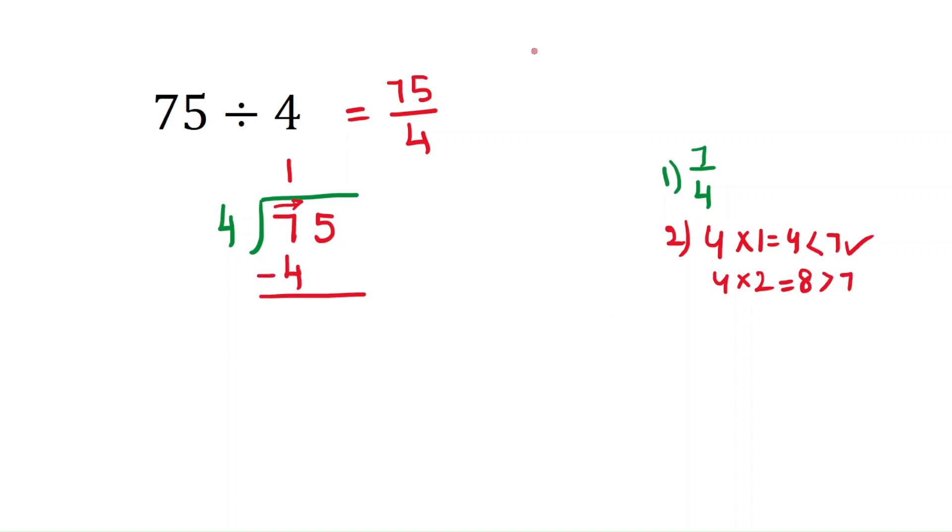And then next subtract. 7 minus 4 is 3. And fourth step is bring down. So you need to bring down the next number which is 5. That is 35. And again the fifth step you have to repeat the steps again.